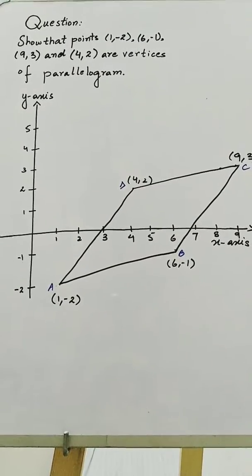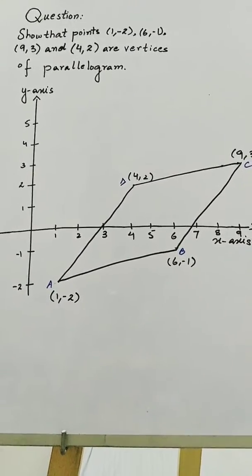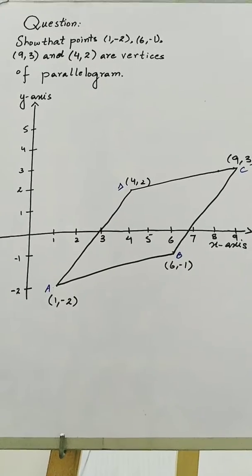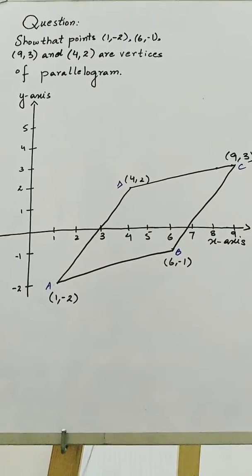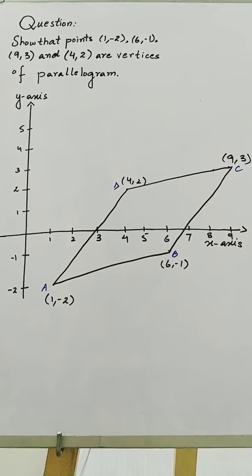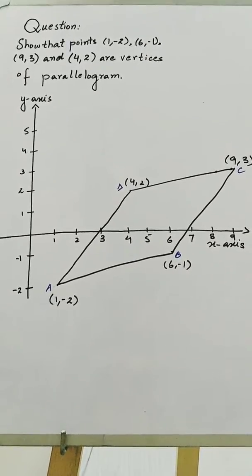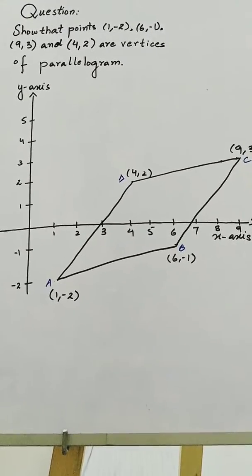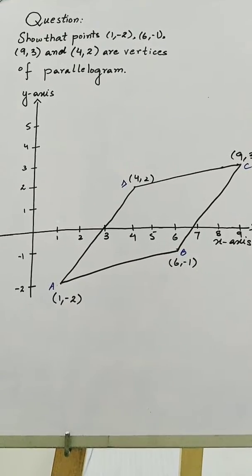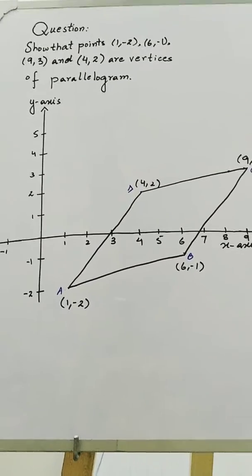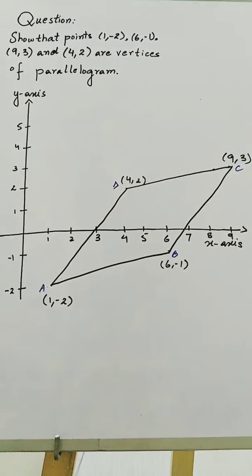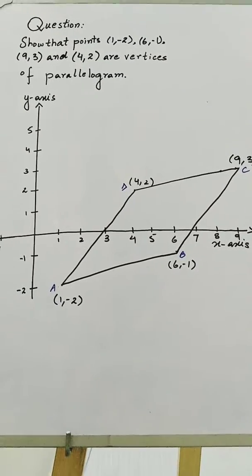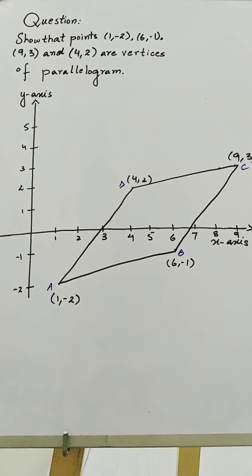Here we have a question in which we have to show that the 4 coordinates which are given here are the vertices of a parallelogram. We have drawn a diagram with the help of these coordinates just for our convenience, so as to know which sides are opposite to each other. We name the 4 coordinates as A, B, C and D.